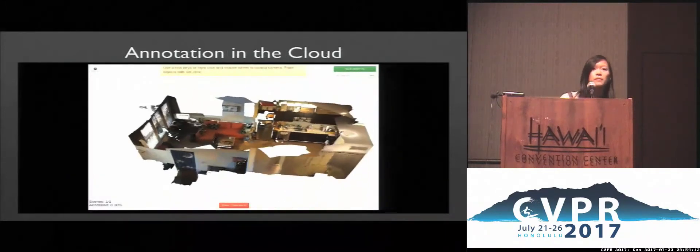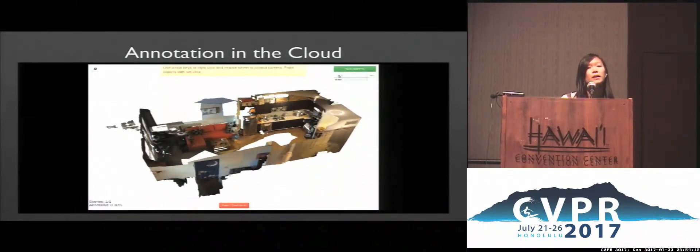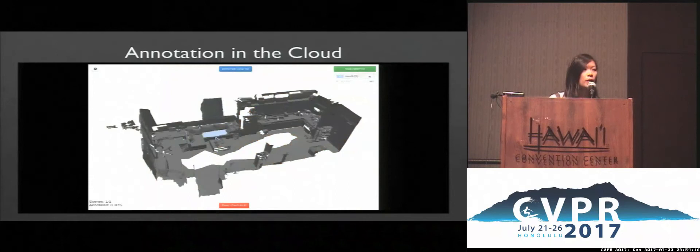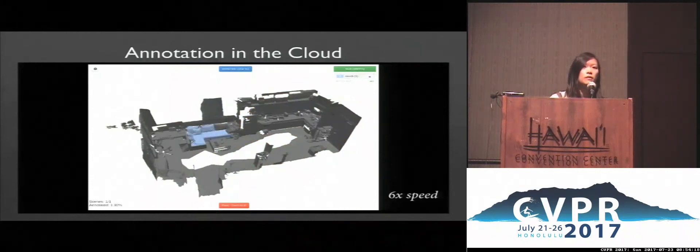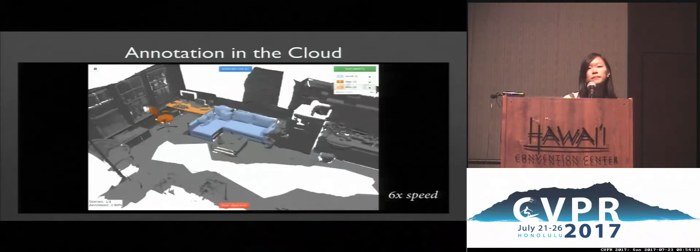Here, we can see our semantic annotation task on Amazon Mechanical Turk. A user paints over an over-segmentation of a mesh, grouping together segments in order to label object instances in 3D.